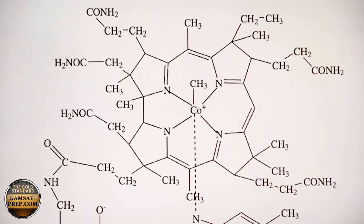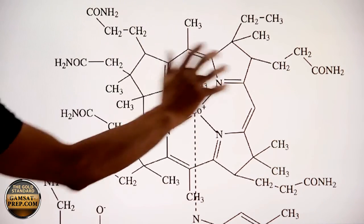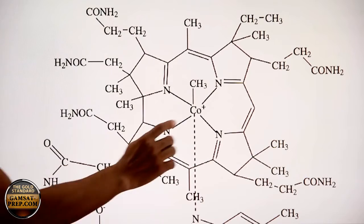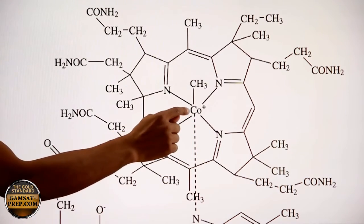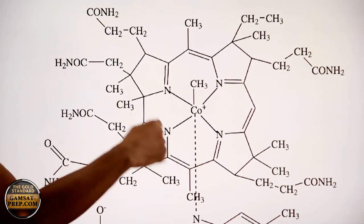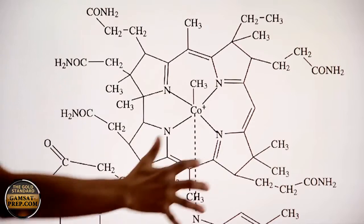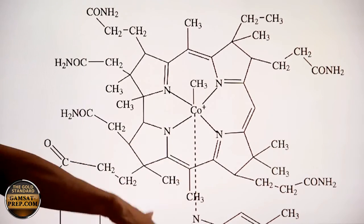But just as a backdrop, this happens to be vitamin B12. It happens to be most of vitamin B12. This is called the Corrin frame. In the center, there's a cobalt atom, cobalt cation, actually, positively charged. And these are nitrogens around here. And there's this frame here. And actually, the molecule continues below.